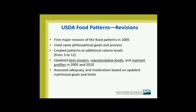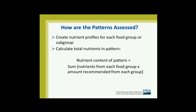We did the first major revision in 2005. We did not amend the philosophical goals or the process. We did create additional calorie patterns — the original patterns only had three calorie levels, now we have 12. And we updated terms: item clusters, representative foods, and nutrient profiles. Then we assessed the adequacy and moderation goals compared to these updated amounts. A nutrient profile is essentially all the nutrients we expect from a particular food group. The nutrient content of the pattern is the sum of the nutrients from each food group times the amount we recommend — two cups of fruits, two and a half cups of vegetables, et cetera.